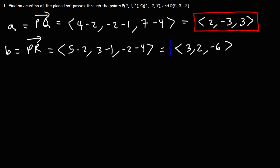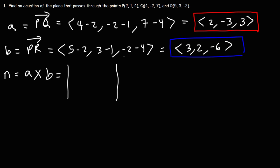Now that we have both vectors A and B, we need to take the cross product to get the normal vector. The normal vector N is going to be the cross product of A and B. We set it up as a 3 by 3 matrix. The first row contains the unit vectors i, j, and k. The second row contains the components of vector A: 2, negative 3, 3. The last row contains vector B: 3, 2, negative 6.